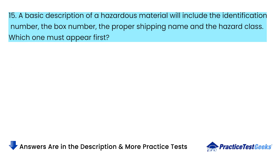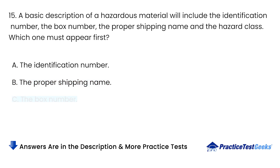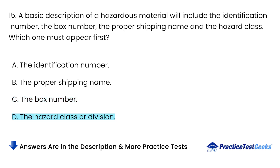A basic description of a hazardous material will include the identification number, the packing group number, the proper shipping name, and the hazard class. Which one must appear first? A. The identification number. B. The proper shipping name. C. The packing group number. D. The hazard class or division.